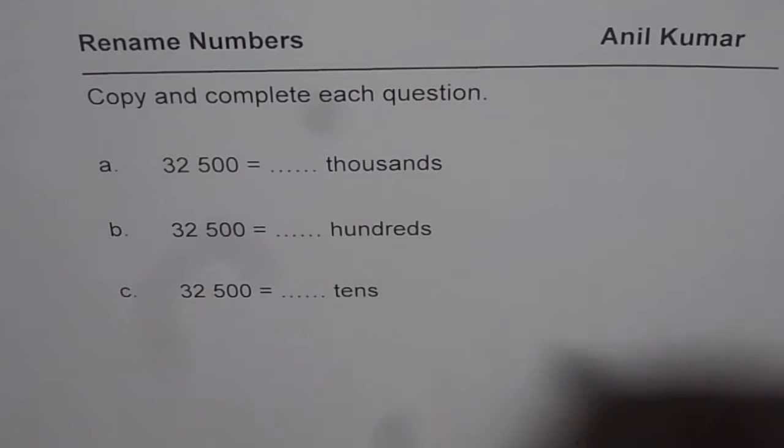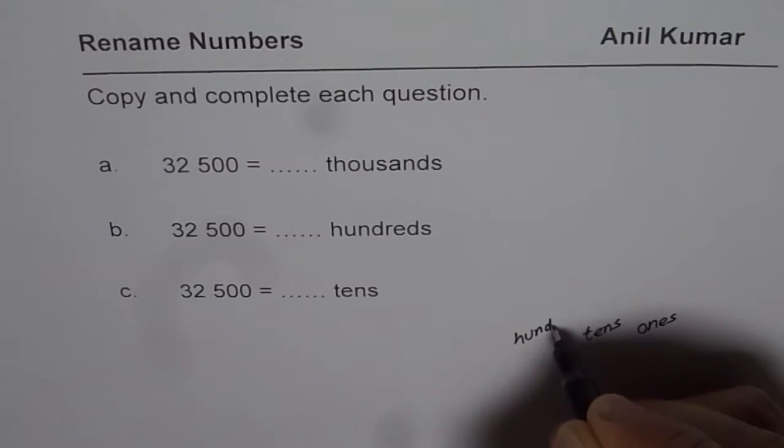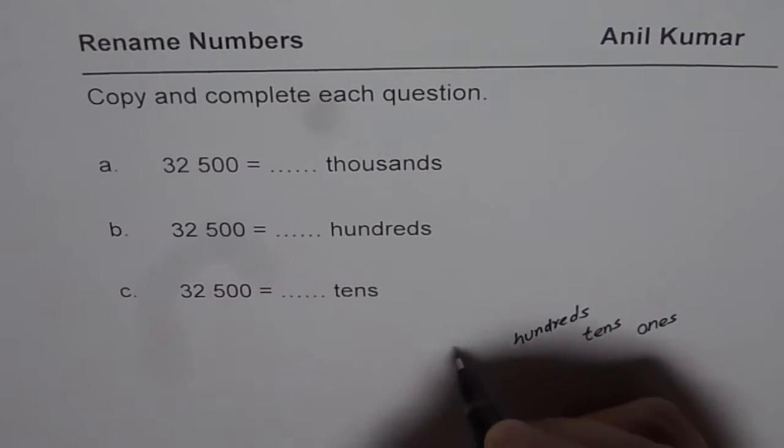So the concept here is, let's first make our place value chart. It has ones, tens, hundreds, thousands.